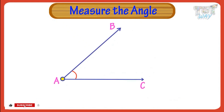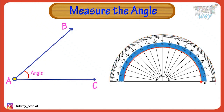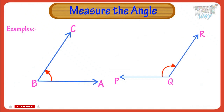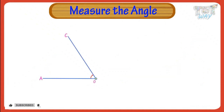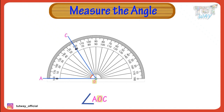Here we have an angle. Now let's measure it. We use a protractor to measure angles. It has two scales marked from zero to 180 degrees — one is left to right and the other is right to left. We will see with examples why there are two scales on the protractor. The two scales make it easy for us to measure angles facing different ways.